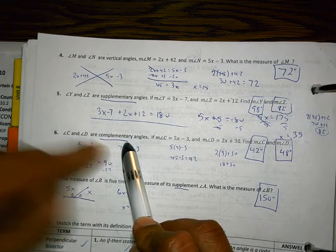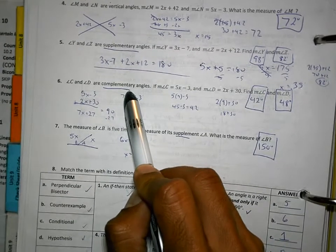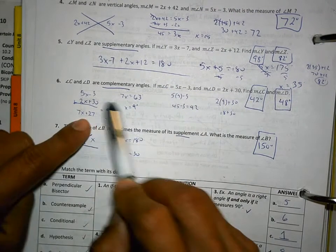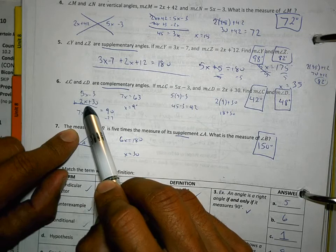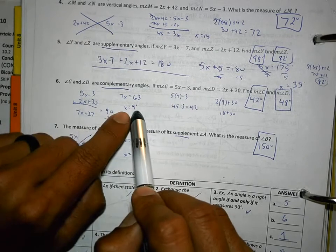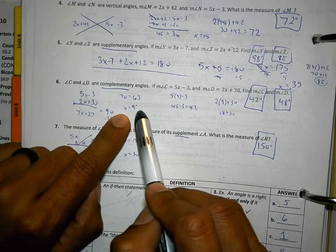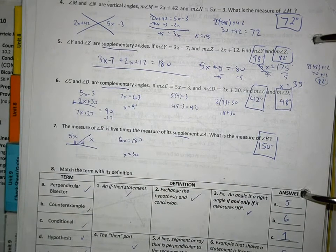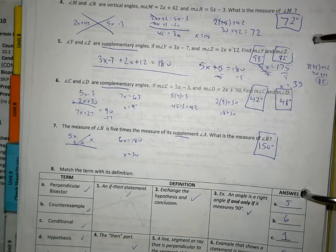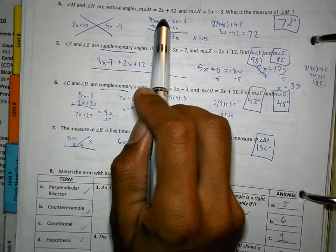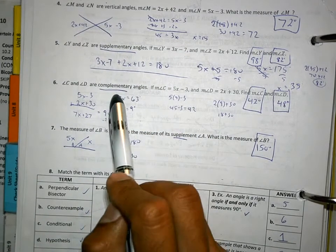The word complementary, on the other hand, means adds to 90 degrees. So, this angle plus this angle should equal 90. I wrote down 5x minus 3 plus 2x plus 30 equals 90. And then I combined like terms. I subtracted and found an x that would make them add to 90. And then I plug that x back in. Vertical angles are equal. Supplementary adds to 180. Complementary adds to 90.